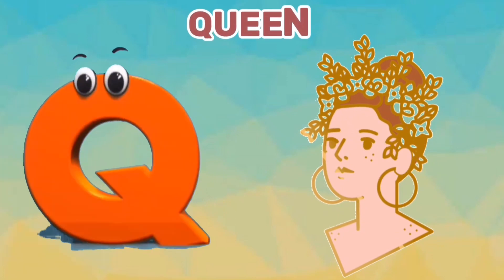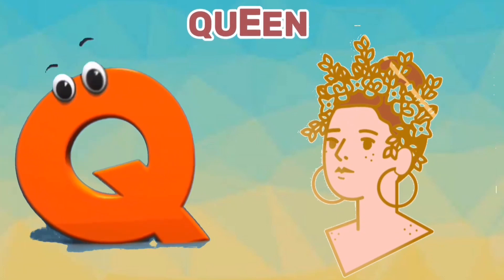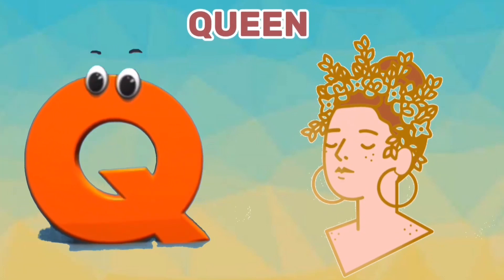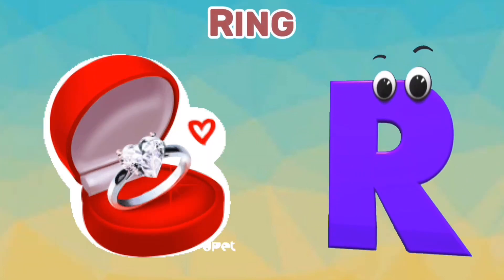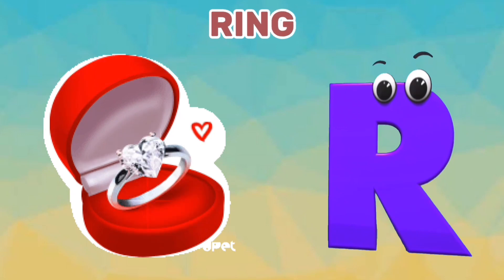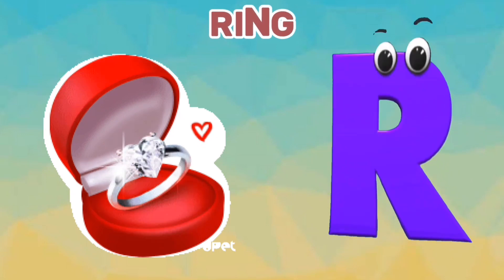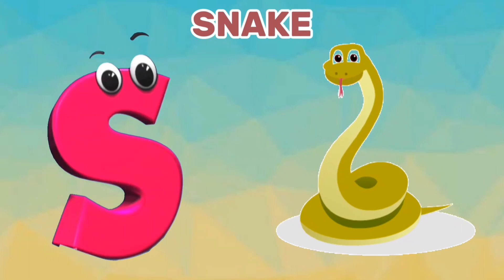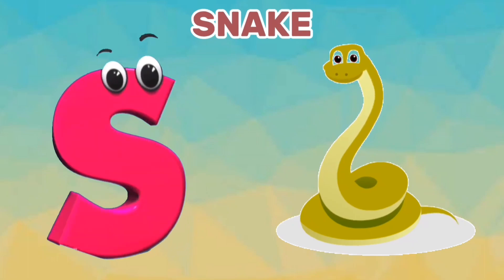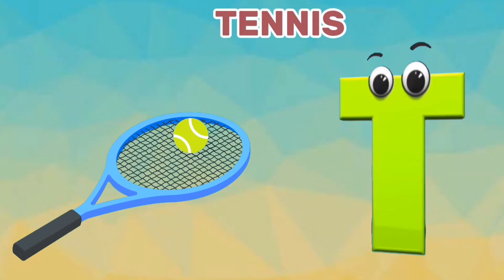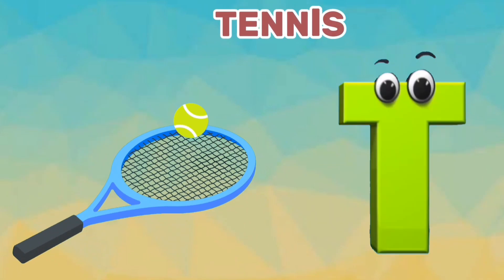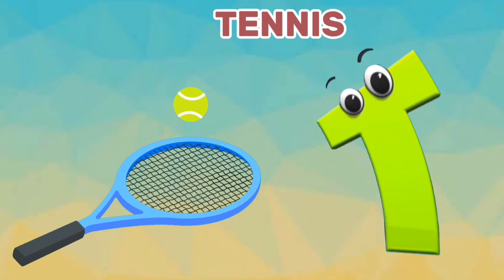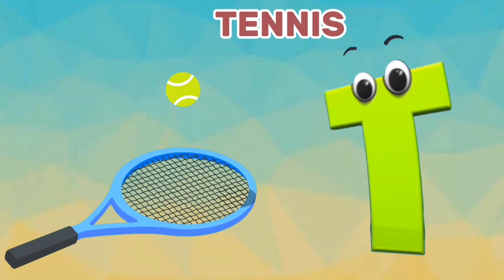Q is for Queen. Qu, Qu. Queen. R is for Ring. R, R. Ring. S is for Snake. S, S. Snake. T is for Tennis. T, T. Tennis.